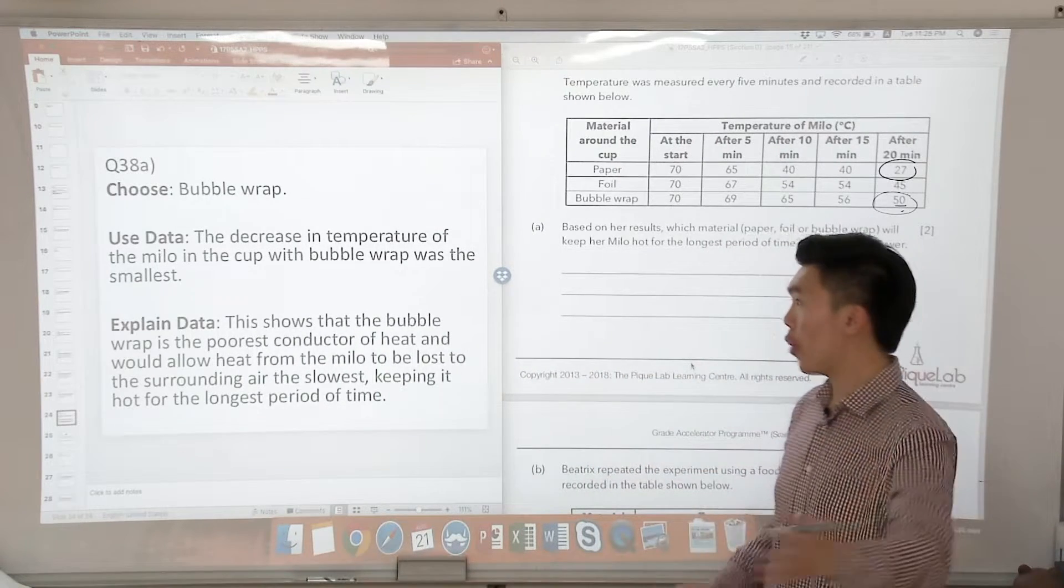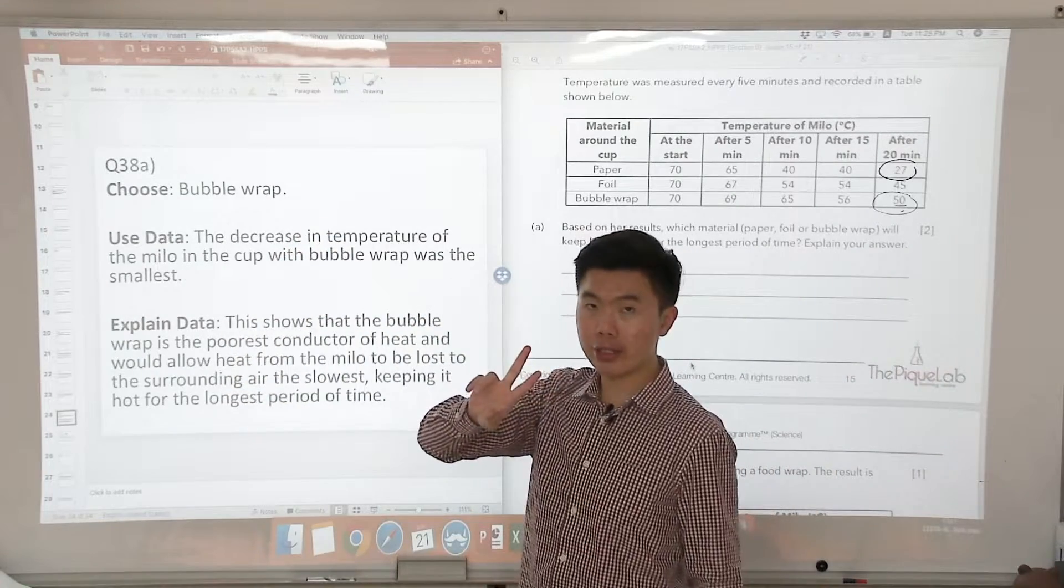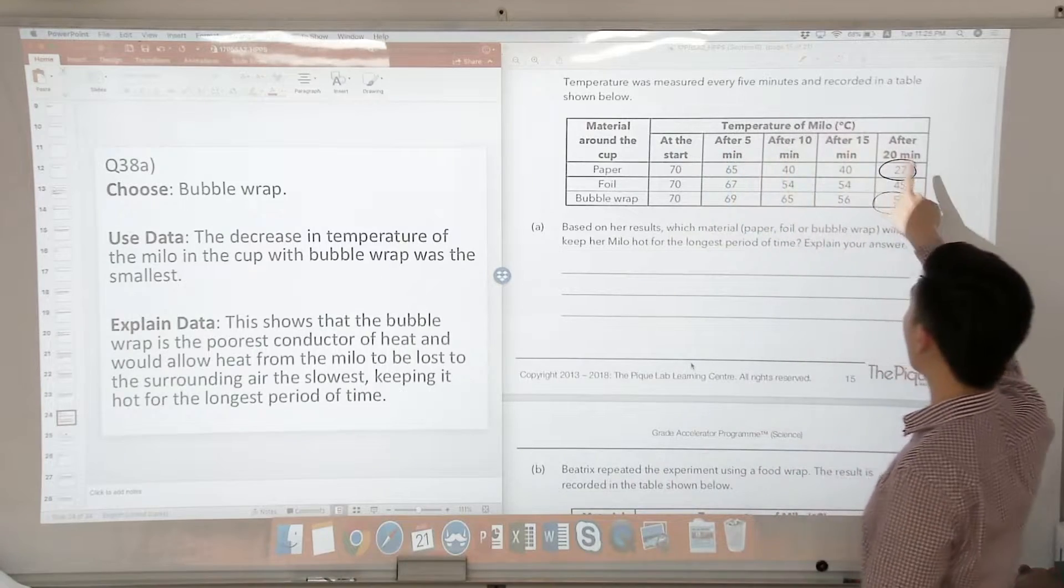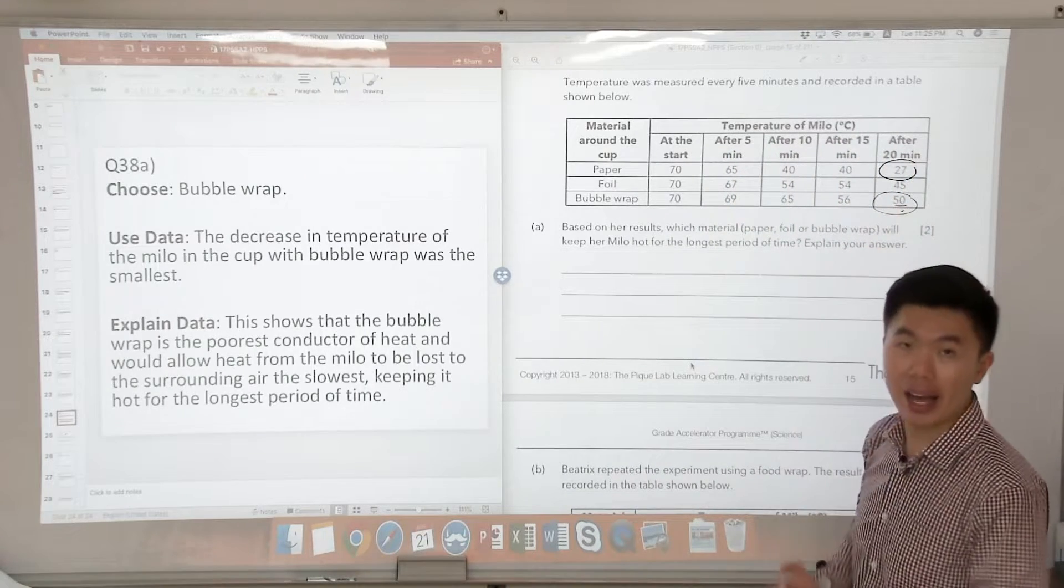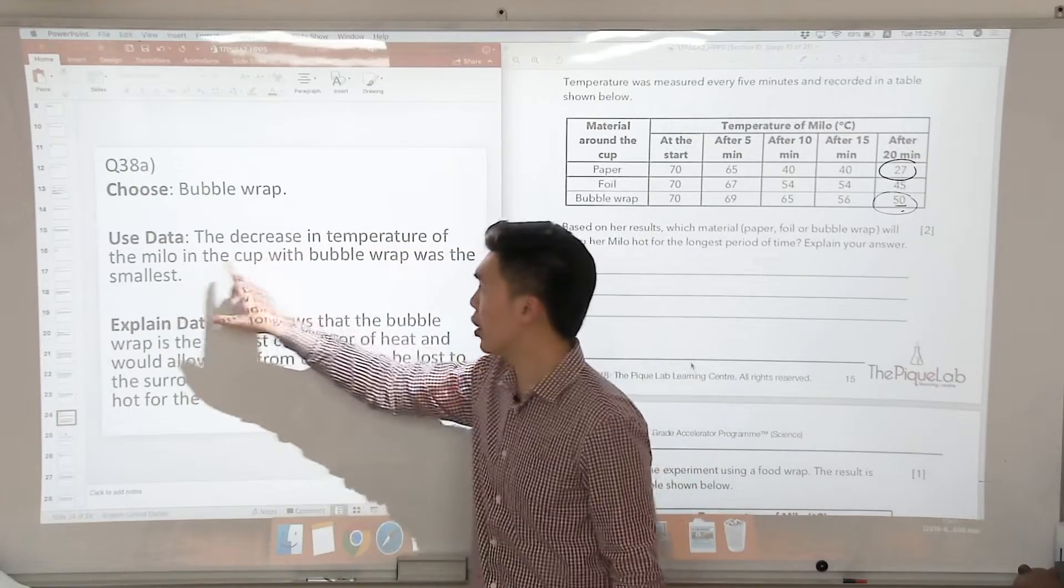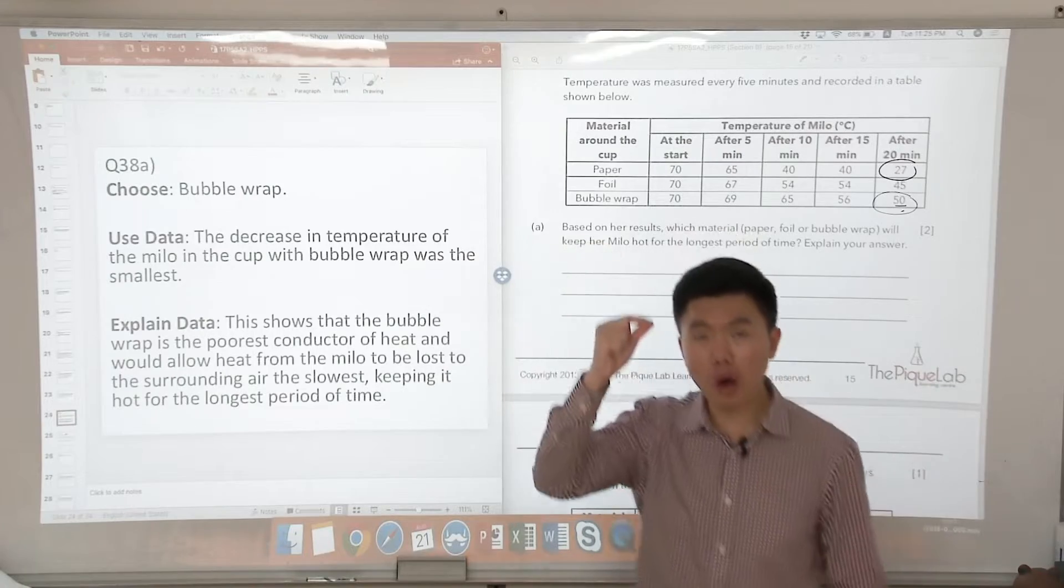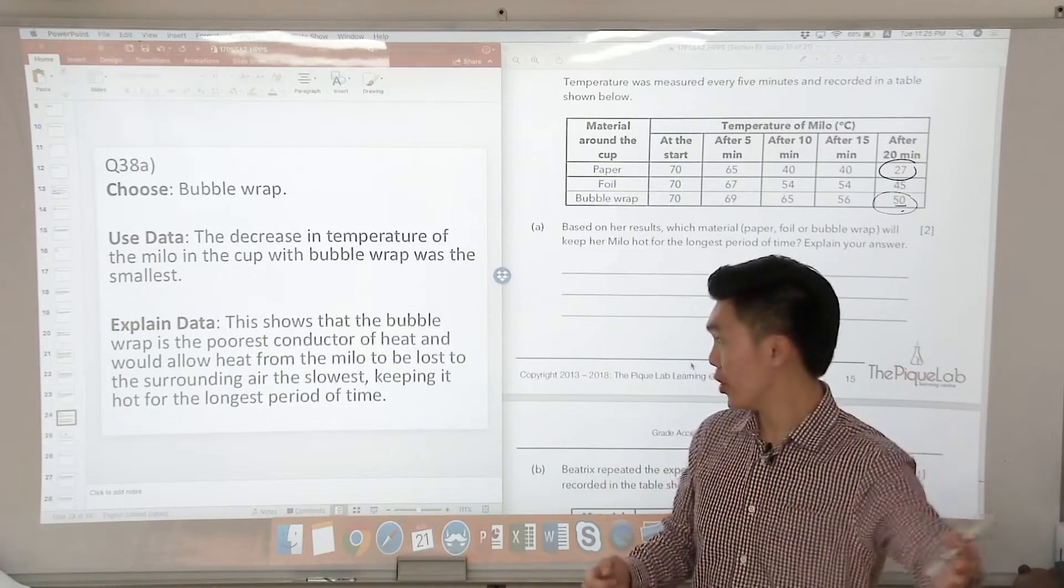I'm going to choose the bubble wrap. If you look at using data, there are two ways that you can phrase it. One is that you say the temperature of the Milo after 20 minutes was the highest. Or you can also say the decrease in the temperature of the Milo in a cup with the bubble wrap was the smallest. So the smallest decrease means that the least amount of heat was lost.